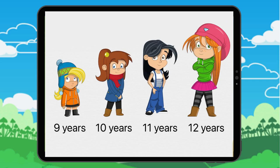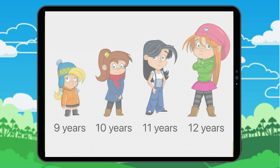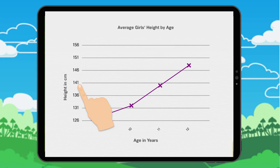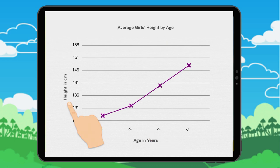Now, we'll make a graph showing the height of 4 girls by age. This graph shows the average height of the girls by age. You'll notice that this axis is a function of this one. Here, the size is a function of the age.